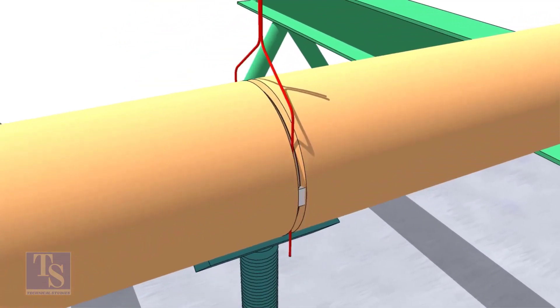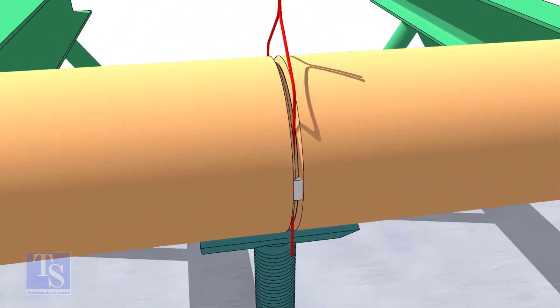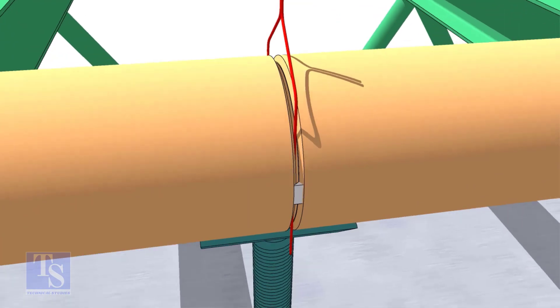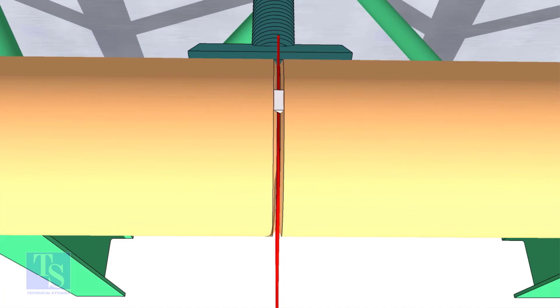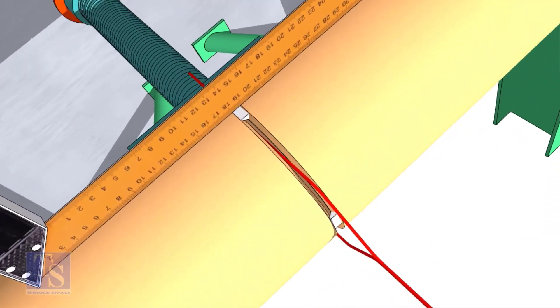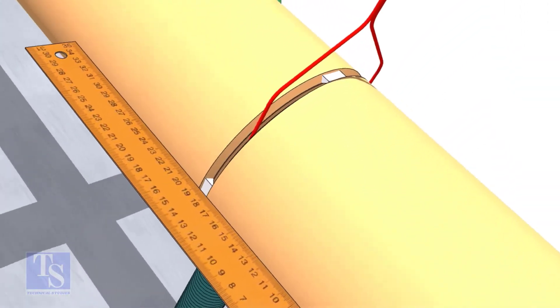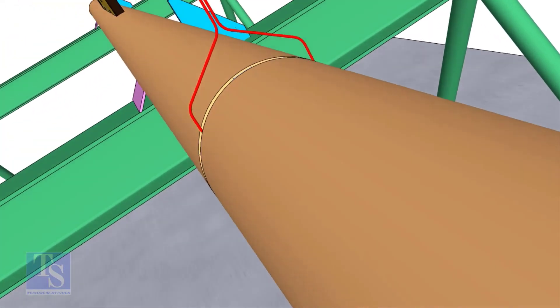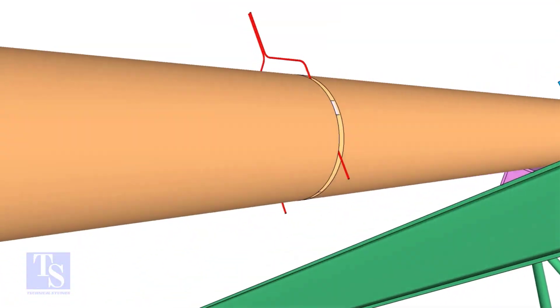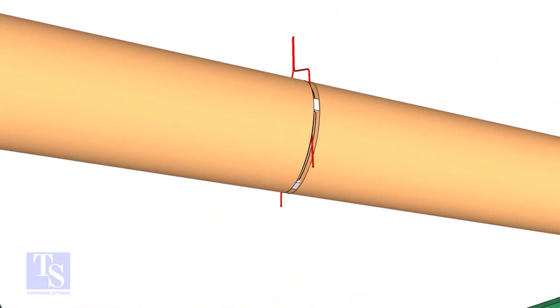Tack weld on both sides of the pipe, then the top and bottom of the joint. Don't forget to cross-check the overlap.